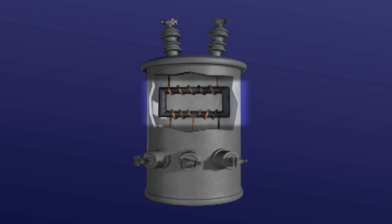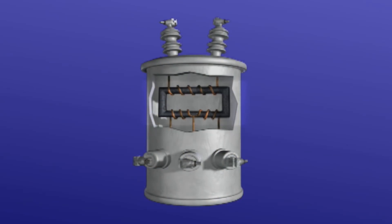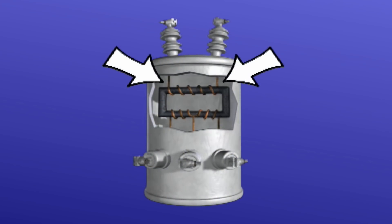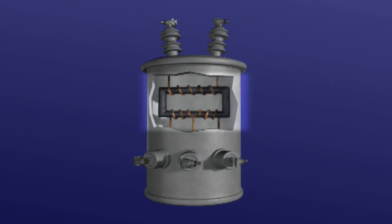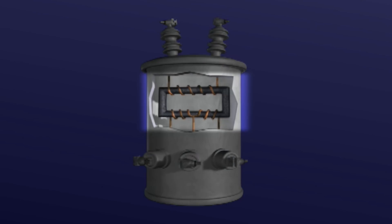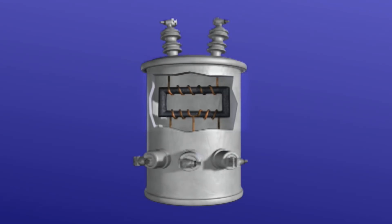Inside a typical transformer are two windings: a primary winding and a secondary winding. Both windings are wrapped around a common metal core, and there are no physical connections between the windings.